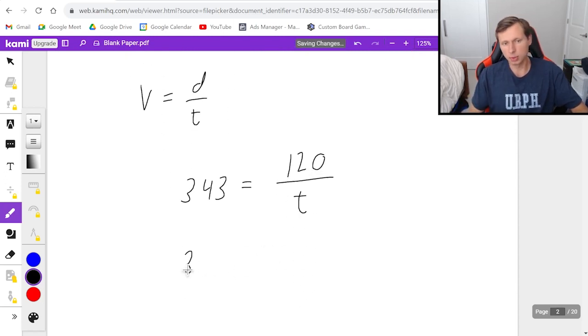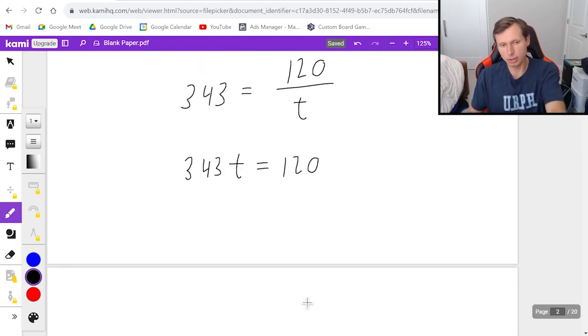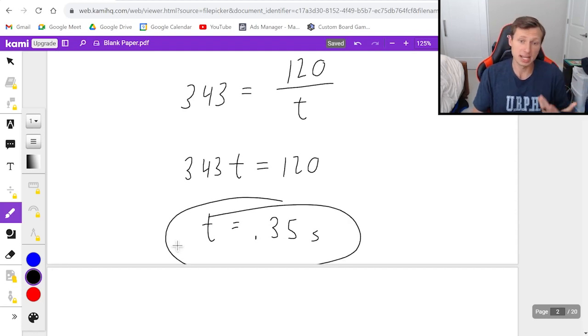In order to solve for time, I multiply both sides by t, and then I'll divide by 343. And after I plug this in my calculator, I'll get a time of 0.35 seconds. In other words, you'll hear that echo in less than a second.